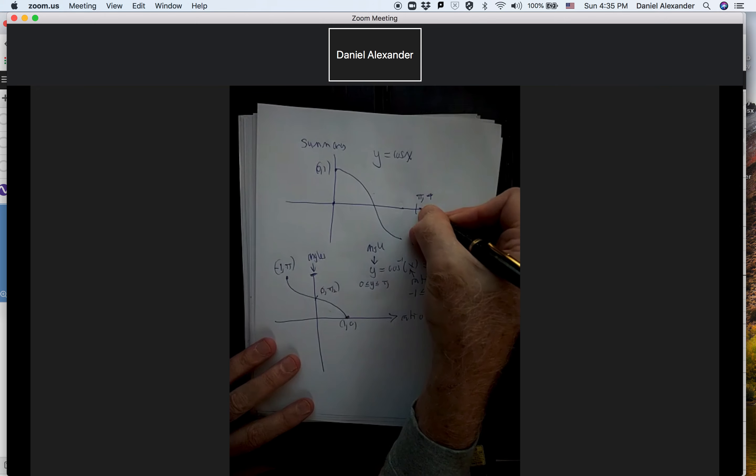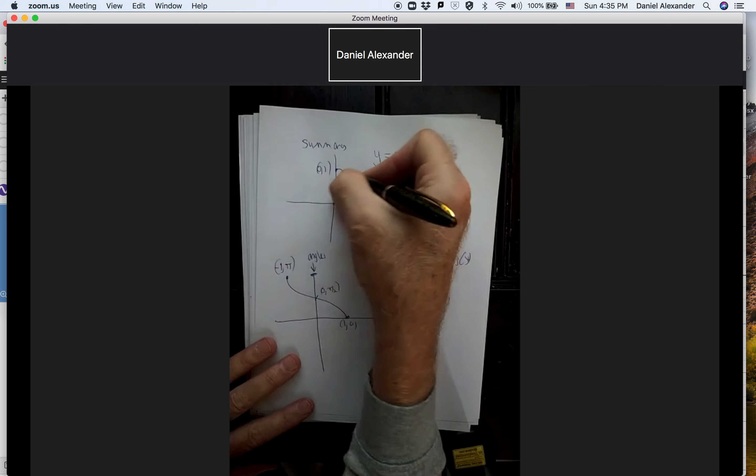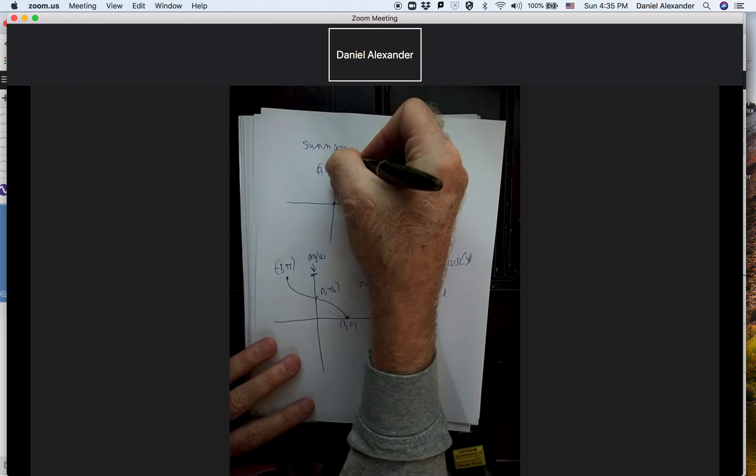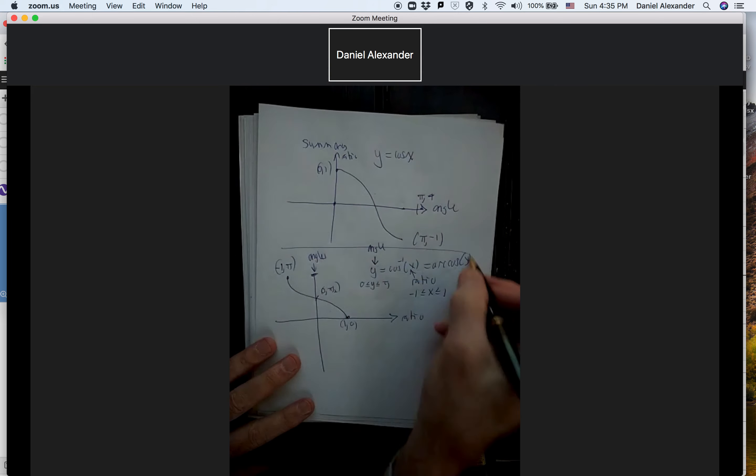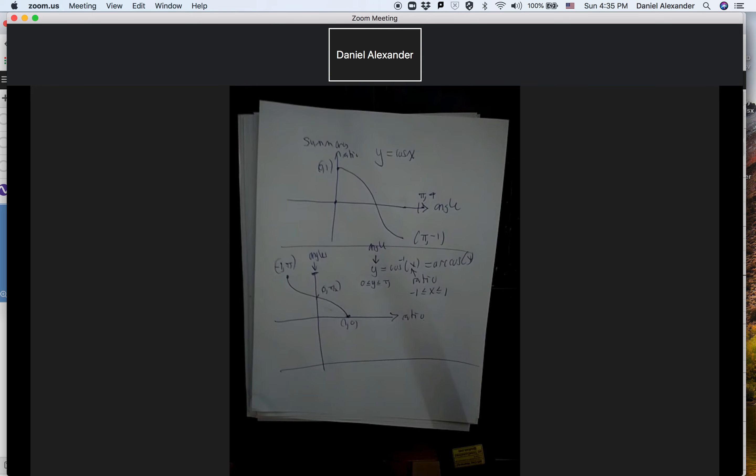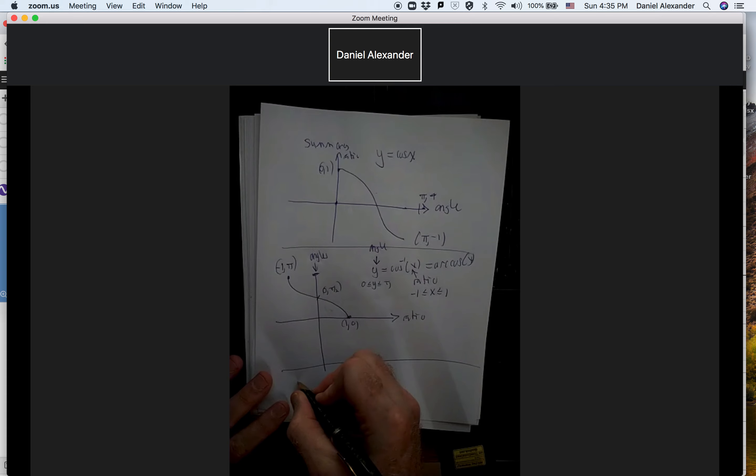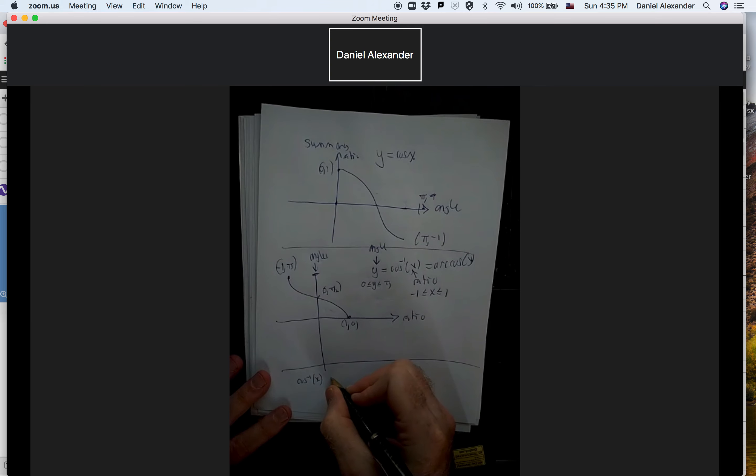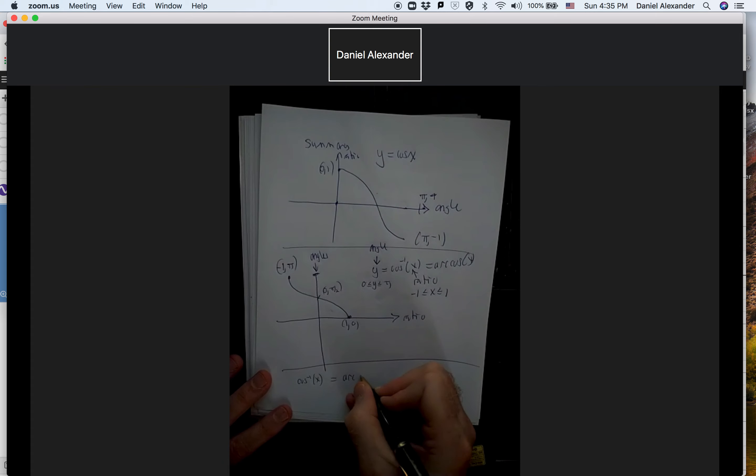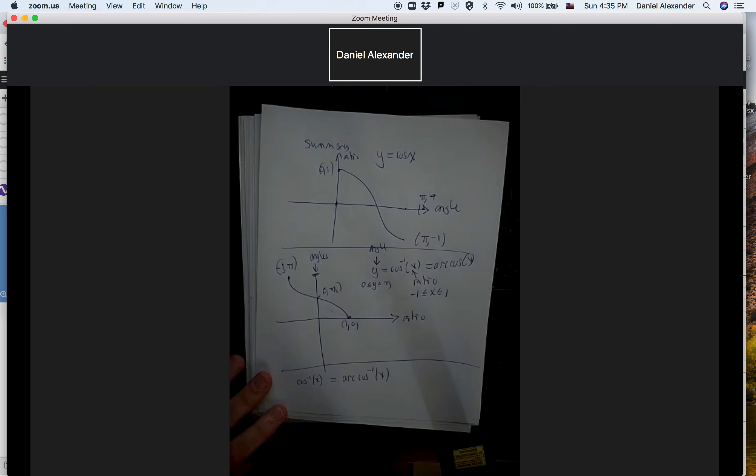Over here, we plug in an angle for the cosine and get a ratio. And that's a good summary of that. And the book has it as well. By the way, you can call it the inverse cosine function, or you can call it the arc cosine function. It's the same for the sine. I didn't put it in there, but you can put that in there.